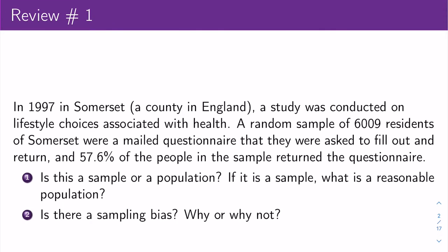We'll begin with a quick review problem. In 1997, in Somerset, a county in England, a study was conducted on lifestyle choices associated with health. A random sample of 6,009 residents of Somerset were mailed a questionnaire to fill out and return, and 57.6% of those in the sample returned the questionnaire. Is this a sample or a population? If it is a sample, what is a reasonable population? Is there any sampling bias?